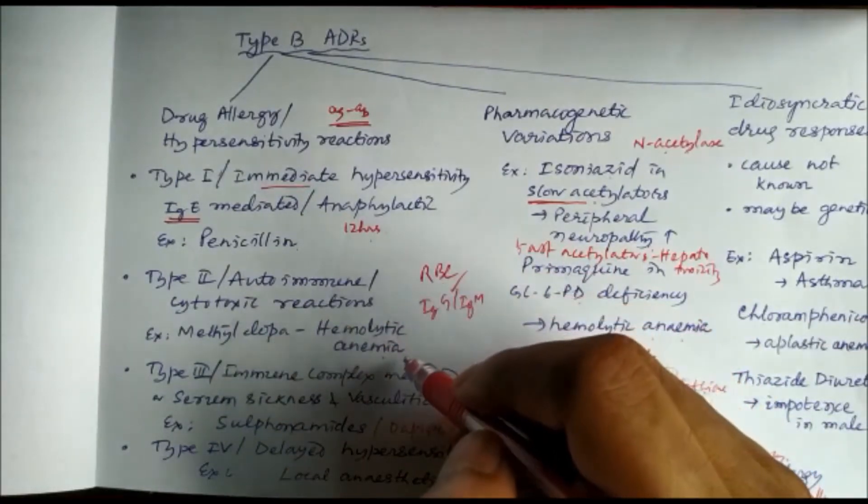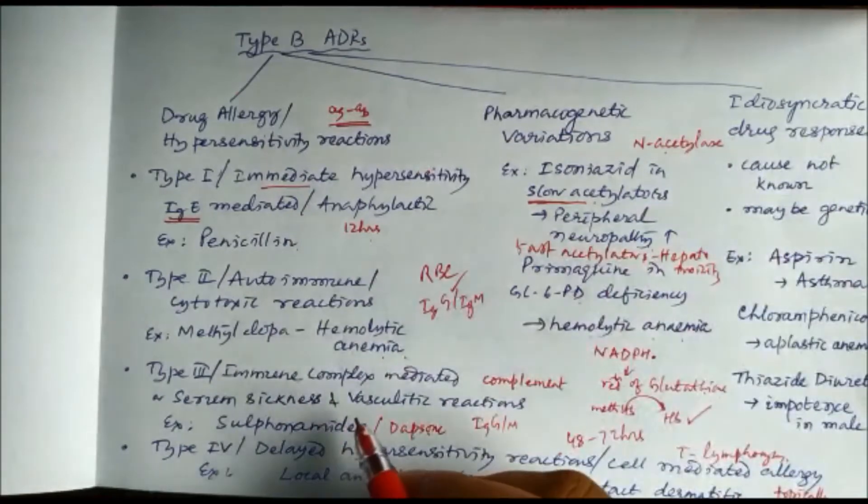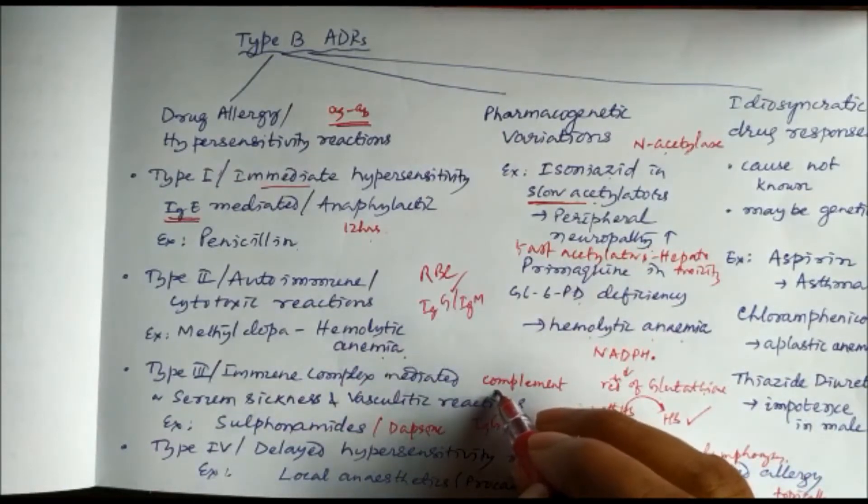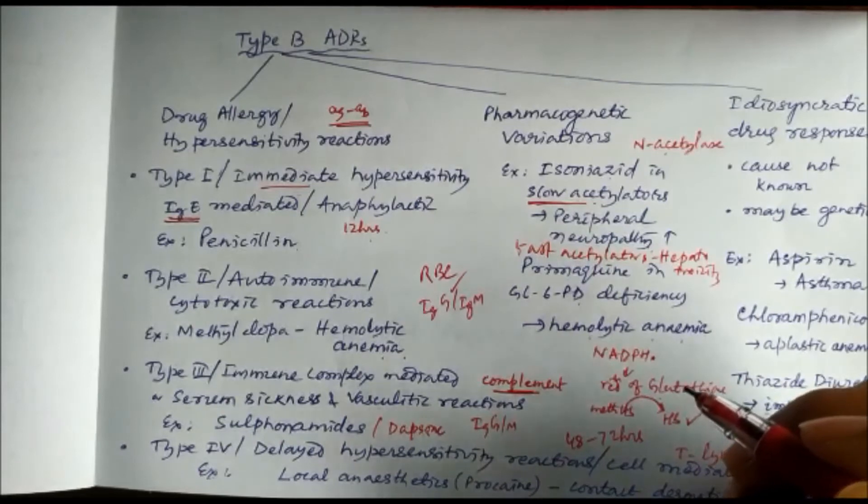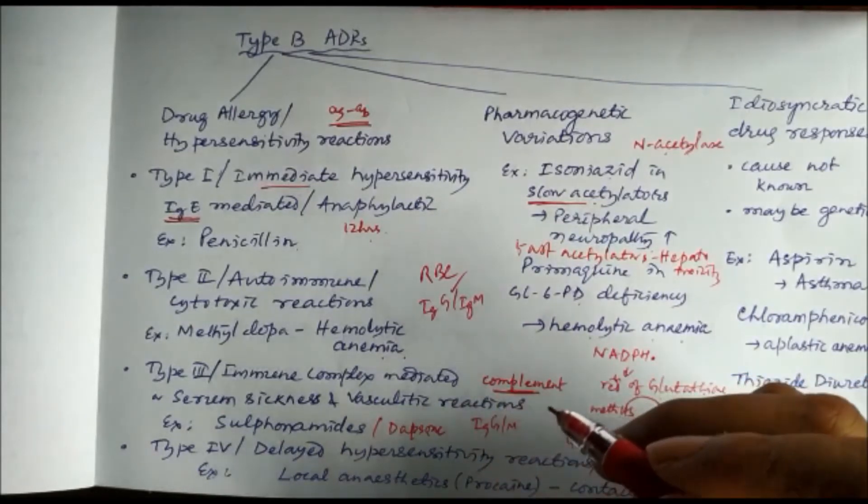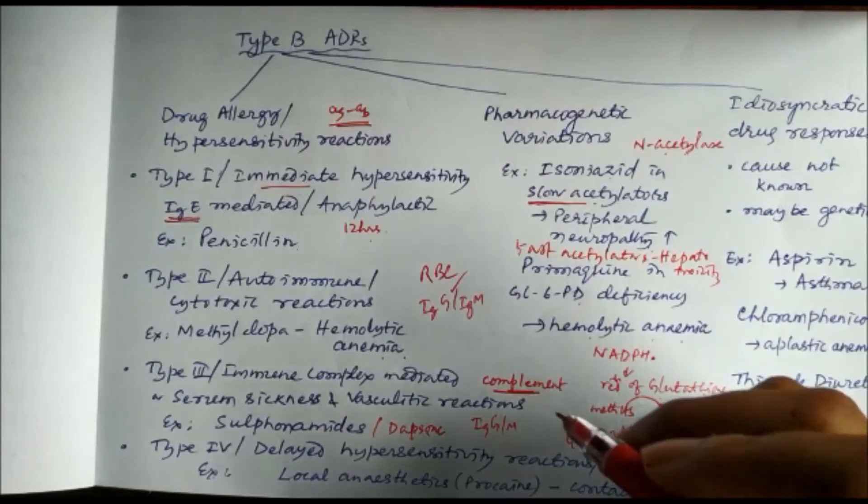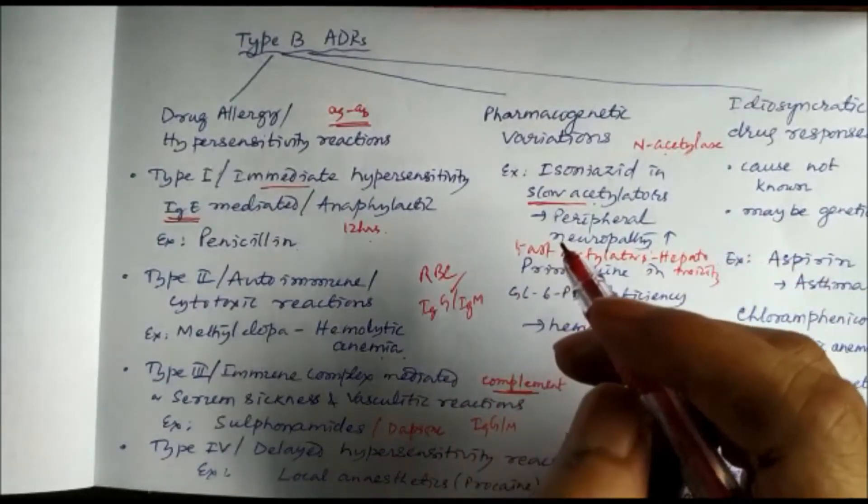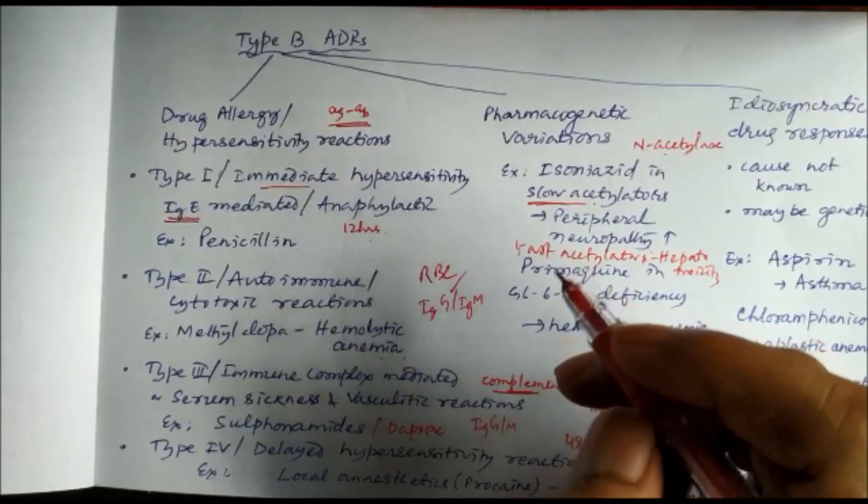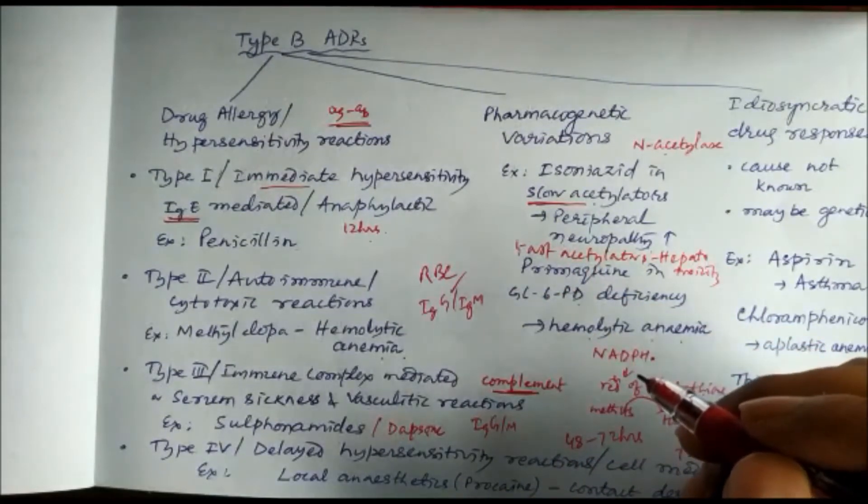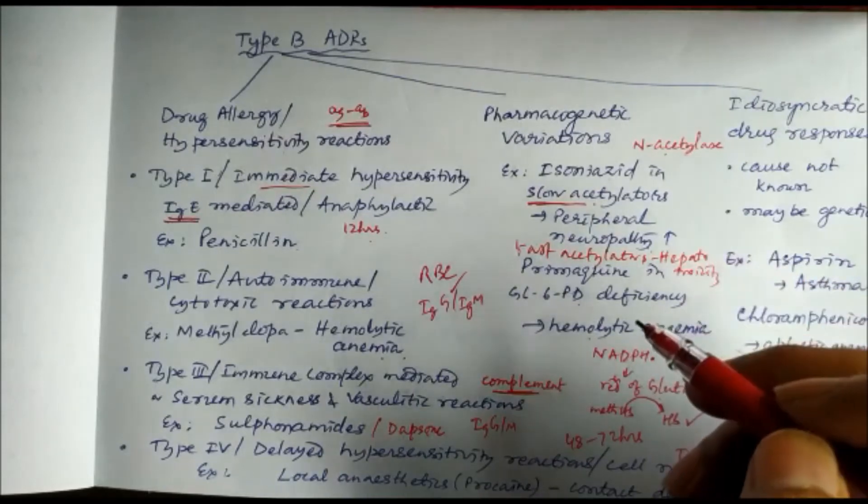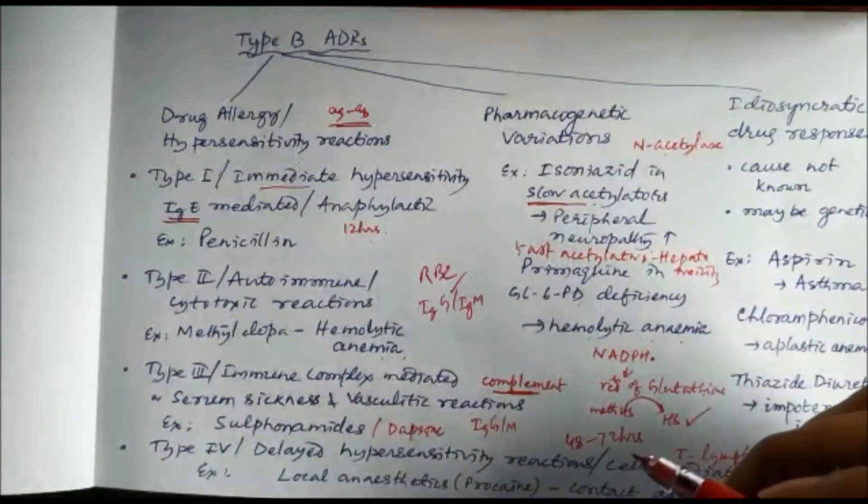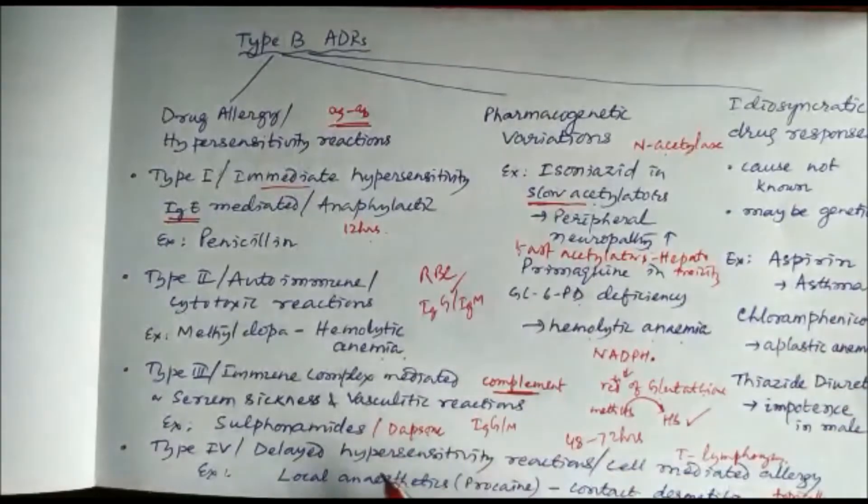Type 3 or immune complex mediated reactions—these reactions are mediated by the complement system. Drugs like sulfonamides and dapsone cause these reactions. In these reactions, the antigen-antibody complexes are deposited in different sites causing erythema, edema, and vasculitis. These reactions are called serum sickness and vasculitis reactions.